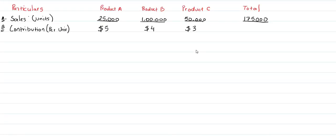In the given question, Canosa company has three product lines: product A, B, and C. The expected sales total is 175,000 units — product A (beer mug A) will be sold 25,000 units, product B 100,000 units, and product C 50,000 units. The contribution per unit is $5 for beer mug A, $4 for beer mug B, and $3 for beer mug C.